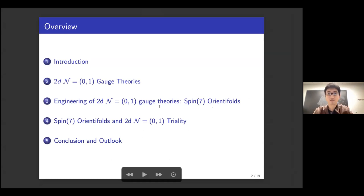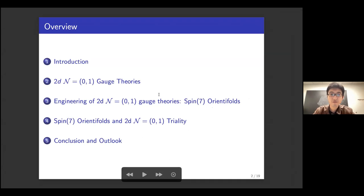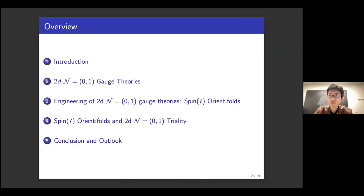First I will give a short introduction and motivation, then I will talk about the building blocks of the (0,1) gauge theories. Then I will move to the geometric engineering of the (0,1) gauge theories, where we introduce a new geometric background called the Spin-7 orientifold. We will show examples of how to use this Spin-7 orientifold to construct (0,1) gauge theories and give a geometric interpretation of (0,1) triality, then move to conclusions and future directions.